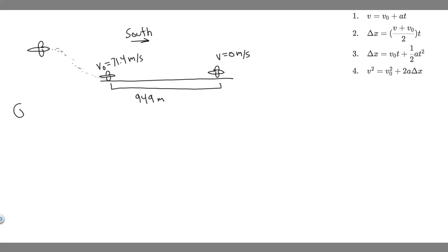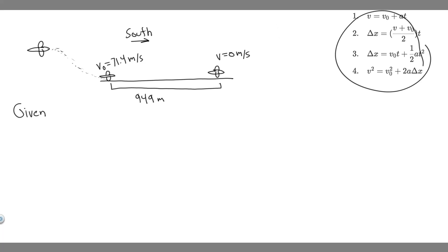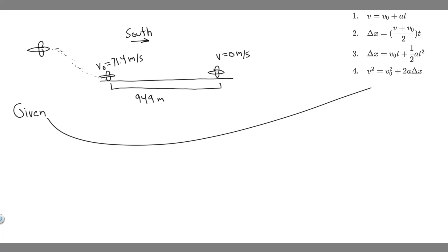Now we want to write down all the variables we're given — the kinematic variables. The way we solve problems with constant acceleration is by using kinematic equations. These are equations we use to solve for certain variables like velocity and acceleration when problems have constant acceleration. The approach is to write down the kinematic variables first.